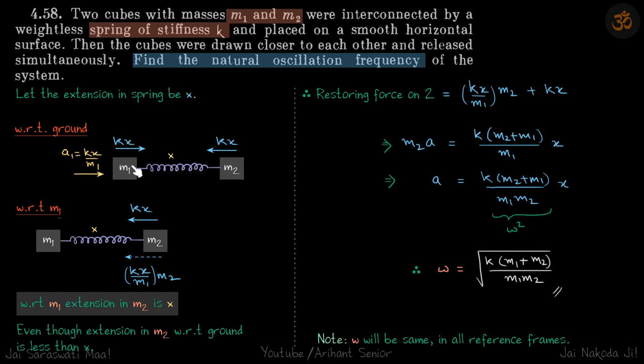So it's better to analyze it with respect to one of the masses. Because then if you're analyzing with respect to m1, let's say, then the extension in m2 is X. So that simplifies our problem. So let's do that. Let the extension in the spring be X with respect to ground.